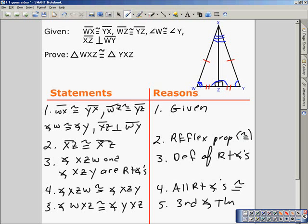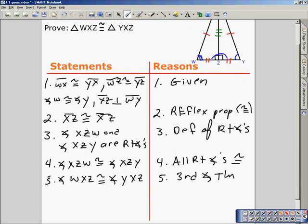Something that I forgot to mark is that XZ is congruent to XZ. I did state that because of the reflexive property. Then you can see from the diagram all three pairs of corresponding sides and all three pairs of corresponding angles are congruent. So, we have established enough to prove that triangle WXZ is congruent to triangle YXZ. And again, that's because of the definition of congruent triangles.